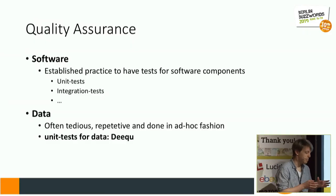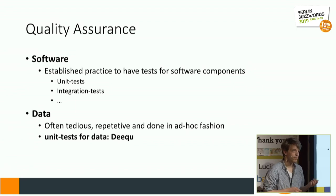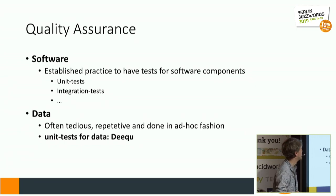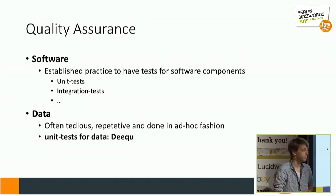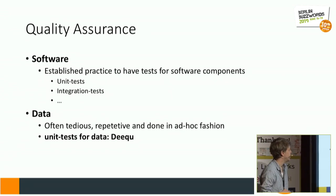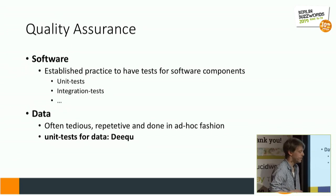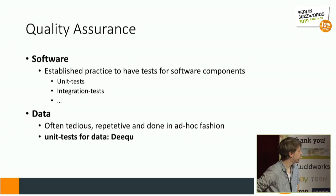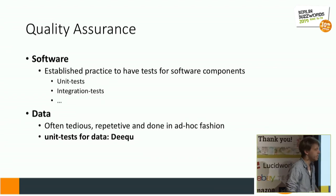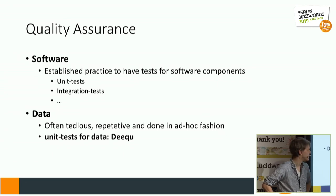Looking at quality assurance — split between software systems and data — in software systems we know how to do this very well. There's a long and well-established practice: depending on the complexity of the component, you might write unit tests, integration and acceptance tests. With data, however, verifying quality has often resulted in very repetitive and ad hoc efforts, and this approach does not really scale. That's why we released DQ. If you take one thing out of this talk, please remember: you can unit test your data with it. That's the basic catchphrase of this library.